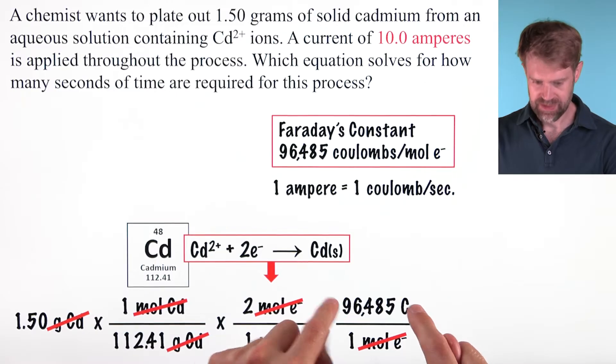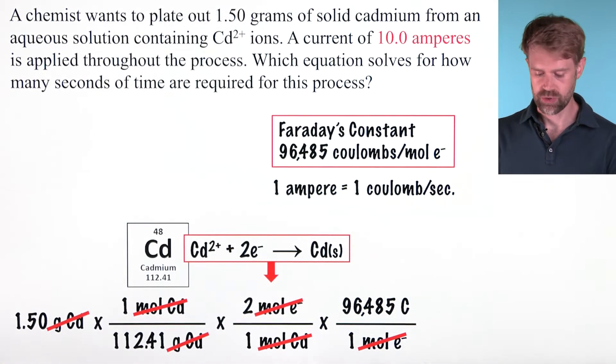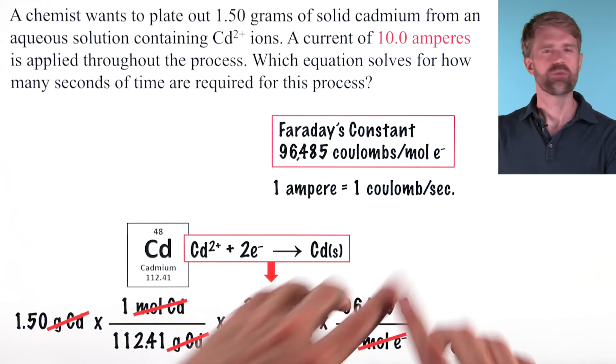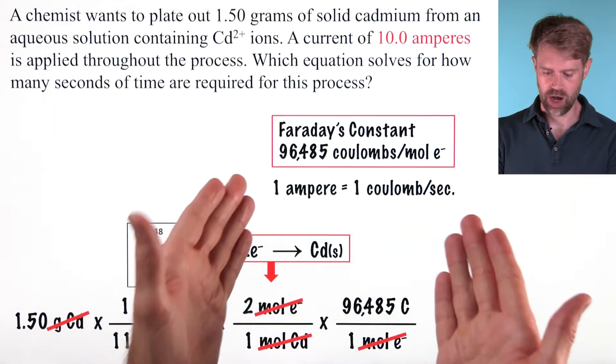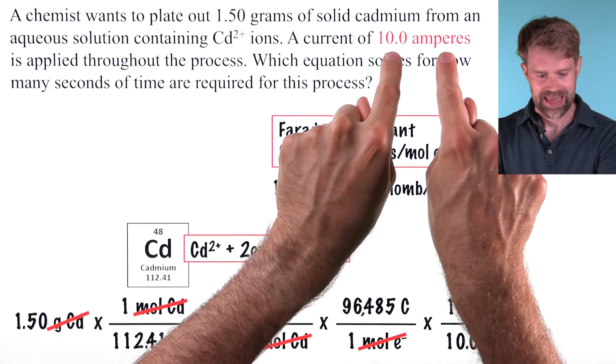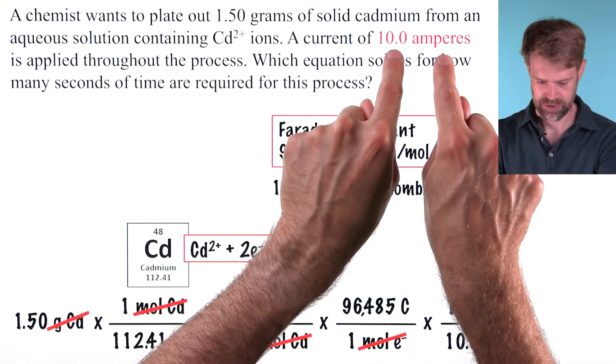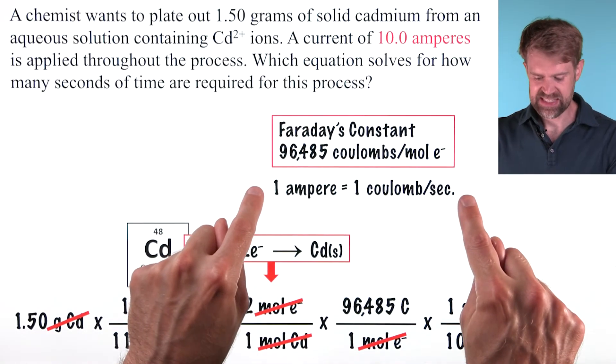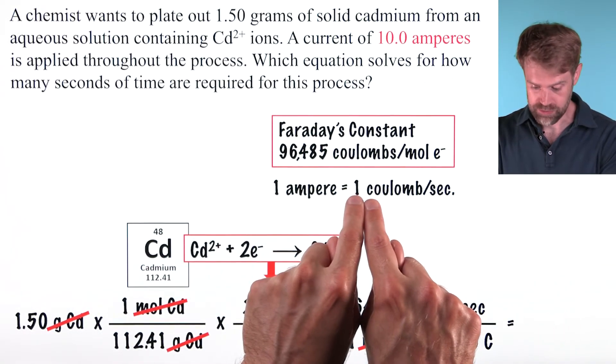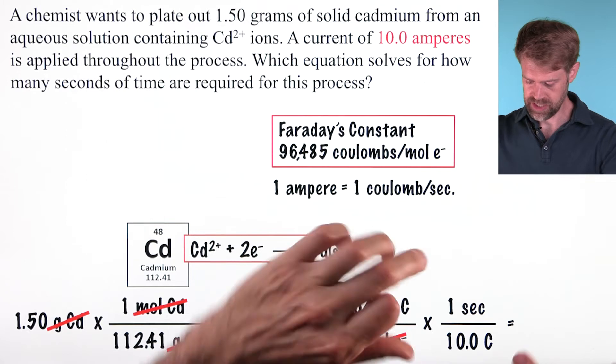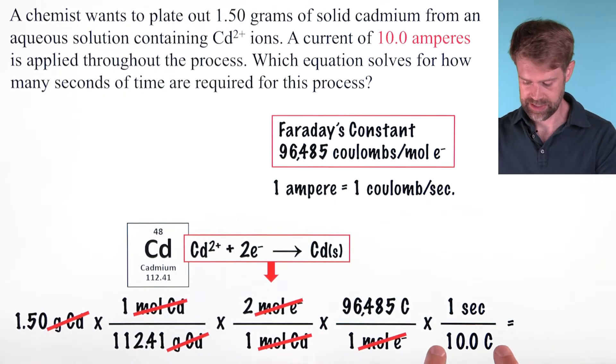Our last step is to convert coulombs to seconds. We do that through the use of the unit ampere. One ampere equals one coulomb per second. For whatever reason this relationship isn't given on the AP exam, so you want to make sure you have it memorized before the test. According to the problem, we use a current of 10 amperes to plate out 1.50 grams of cadmium. So 10 amperes is the same thing as 10 coulombs per second. We're going to flip it around to put 10 coulombs on the bottom, one second on the top, allowing us to cancel out coulombs.